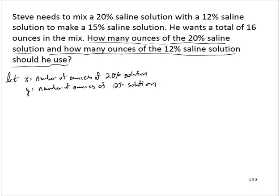Now let's see if we can write a system for this. We're mixing a 20% saline solution with a 12% saline solution to get a 15% saline solution. Specifically, we want a total of 16 ounces in the mix. So we have that x plus y must equal 16. The number of ounces of x and the number of ounces of y added together must be 16.